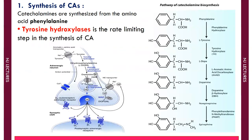Catecholamines are synthesized from the amino acid phenylalanine. This biosynthetic pathway is initiated when L-tyrosine is transported into the adrenergic neurons. The cytosolic enzyme tyrosine hydroxylase converts L-tyrosine to L-DOPA. Tyrosine hydroxylase is the rate-limiting step in the synthesis of catecholamines, because its activity is controlled by the concentration of norepinephrine present in the cytoplasm. The enzyme is inhibited in the presence of high concentrations of norepinephrine, preventing the conversion of L-tyrosine to L-DOPA.